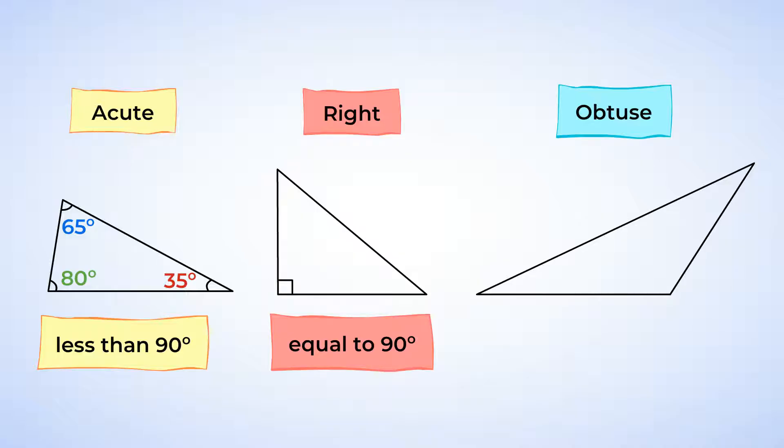And next we have an obtuse triangle. An obtuse triangle has an angle that is greater than 90 degrees. In this obtuse triangle, for example, there's an angle that has a measure of 125 degrees. Now let's practice classifying triangles by their sides and angles.